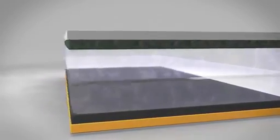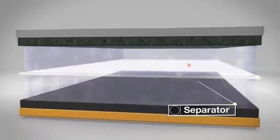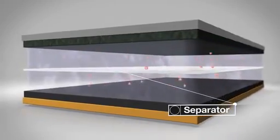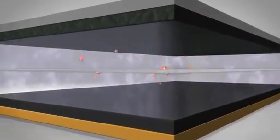To prevent a short circuit, there's a layer placed between the two electrodes, the separator. To the tiny lithium-ions, the separator is actually permeable. The experts call this property microporosity.